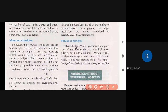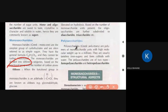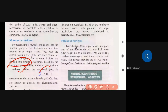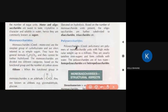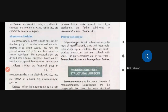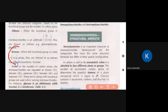Depending upon the functional group, monosaccharides are classified into aldoses and ketoses. Aldoses have an aldehyde functional group. Ketoses have a ketone functional group. So monosaccharides are classified as either aldoses or ketoses.